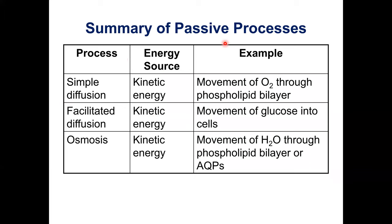Here's a summary of passive processes. We have simple diffusion, facilitated diffusion — either carrier-protein-mediated or channel-protein-mediated — and osmosis. We still use energy because movement isn't possible without energy, but this is the kinetic energy of the moving particles — no ATP. Examples: simple diffusion is oxygen moving through the phospholipid bilayer; facilitated diffusion is glucose or amino acid transport; and osmosis is movement of water either through the phospholipid bilayer or through aquaporins.